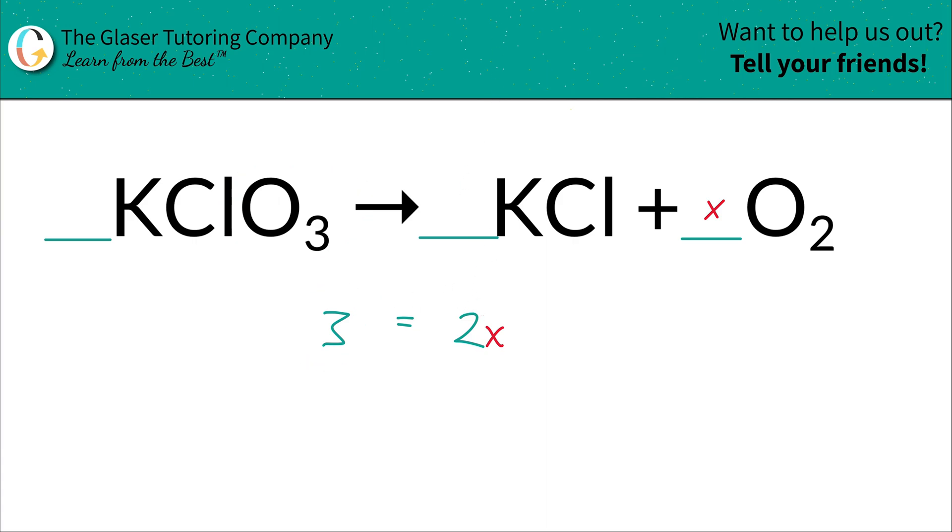Now, what that looks like now in terms of the math is you literally just place in a little x next to that number, the two. Because remember, it's the coefficient that's multiplied by the subscript. It's the coefficient that's multiplied by the subscript. And that whole thing here has to equal the three oxygens on the left-hand side. So now all you do is a little math. To solve for x, you just divide by two. Now I know scary little fractions here. This is going to be three over two is equal to x. Now it's like, oh man, I thought this was going to be easy. There's fractions. But this is actually easy.